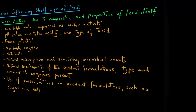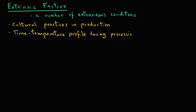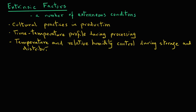The extrinsic factors include a number of extraneous conditions. Some of these factors that influence the shelf life of foods include what type of agricultural practices were used in production on the farm, what type of time-temperature profile was used during processing of the food, and the temperature and relative humidity control during storage and distribution.